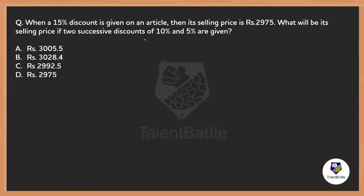Let's solve the first question from profit and loss. When a 15% discount is given on an article, its selling price is 2975. What will be its selling price if two successive discounts of 10% and 5% are given? There are a few people who think in different ways about this.